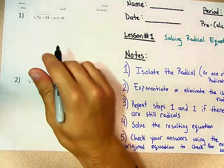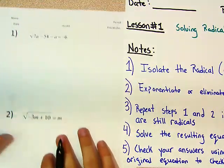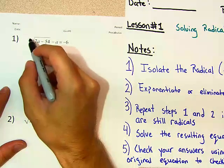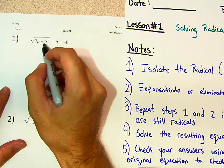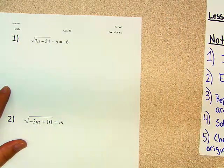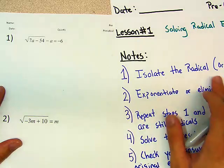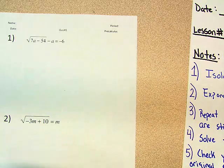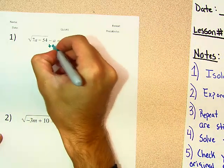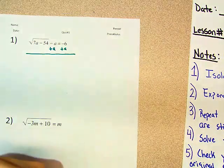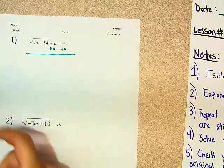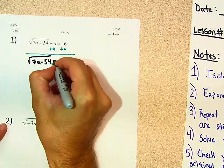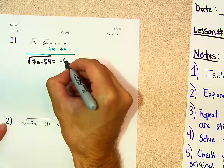Isolate the radical, right? So how do we have this question? It is the square root of 7a minus 54 minus a equals negative 6. So how do we isolate the radical? The first move you're going to want to do is very simply plus a, plus a. And now what do we get? We get square root of 7a minus 54 is equal to negative 6 plus a.